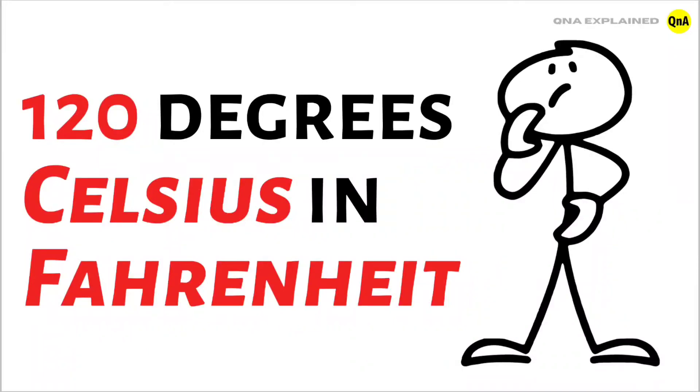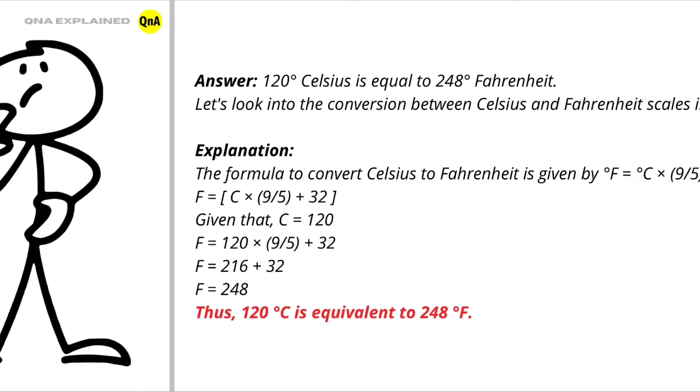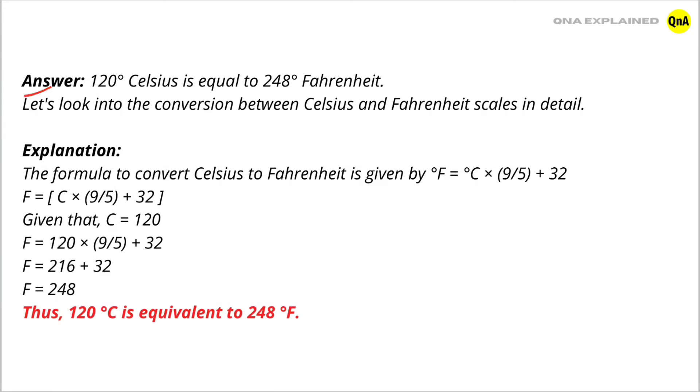120 degrees Celsius in Fahrenheit. Answer: 120 degrees Celsius is equal to 248 degrees Fahrenheit. Let's look into the conversion between Celsius and Fahrenheit scales in detail. Explanation: The formula to convert Celsius to Fahrenheit is given by